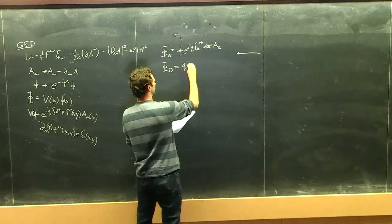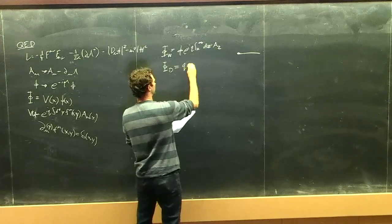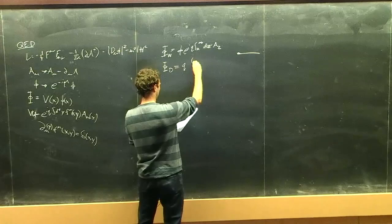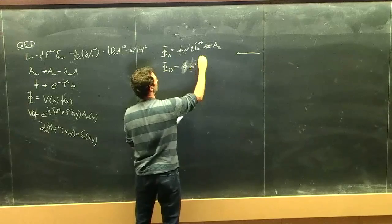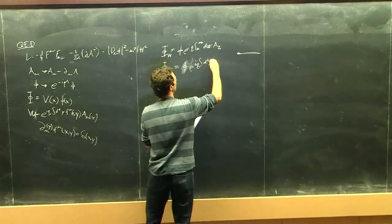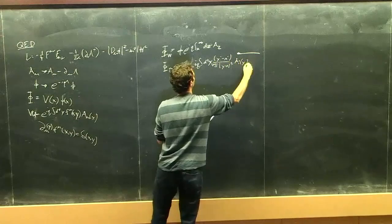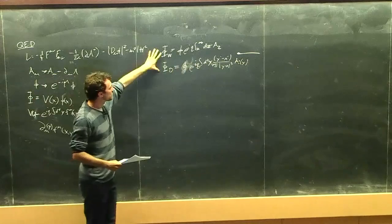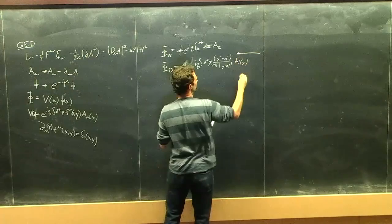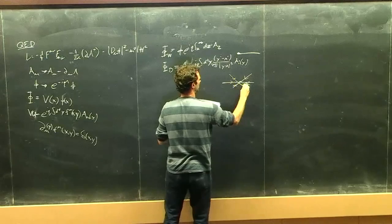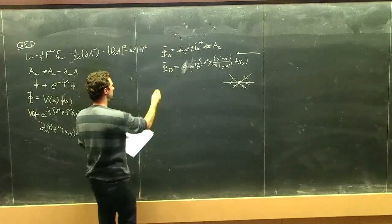There's another option Dirac suggested — I'll call it the Dirac dressing — because this is the one he liked more. Instead of integrating just along a line, you integrate over all of space and you put in basically the Coulomb field. The interpretation is that it creates a charged particle together with some field — in this case, a Coulomb field surrounding a charged particle.